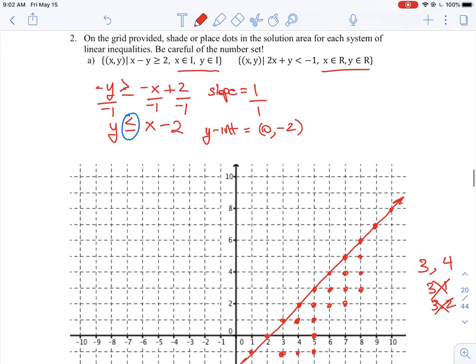And then, if we look at our other equation, so the other equation is a little bit different. We're now plotting on the set of real numbers. If we turn this equation into point slope form, y is less than, and then I'm going to move the 2x over to the other side, so that's going to give you negative 2x and then minus 1. So, our equation is already in point slope form. We know our slope here is equal to negative 2 over 1, and our y-intercept here is going to be equal to 0, negative 1.